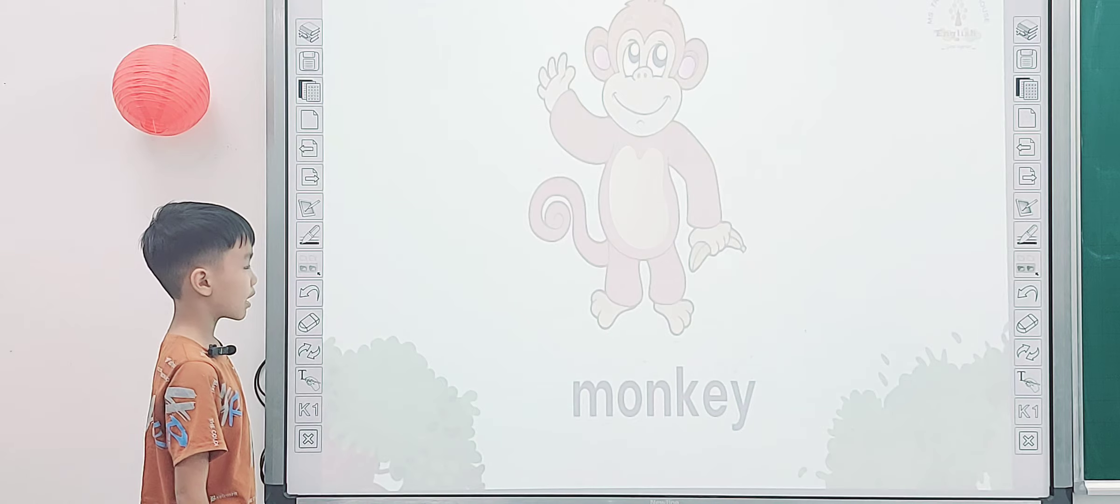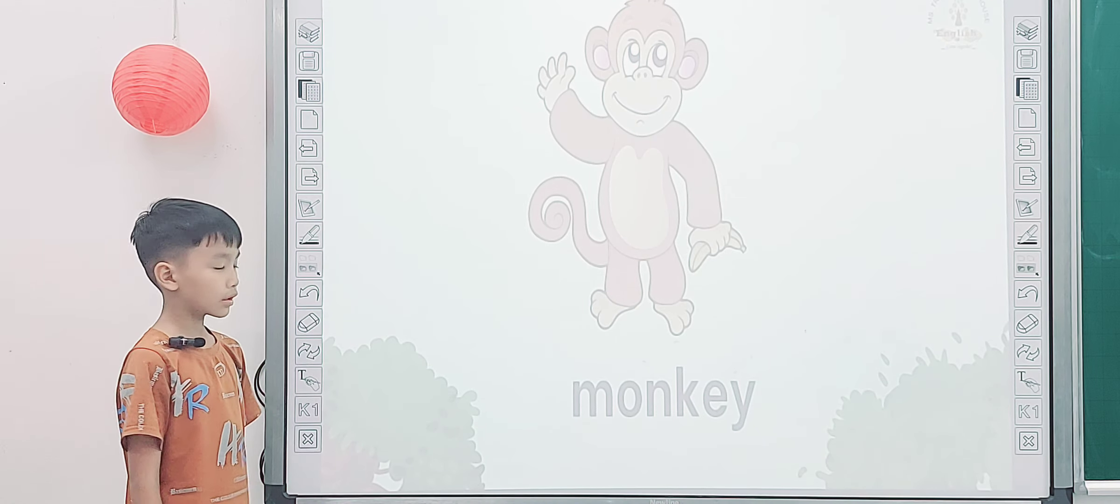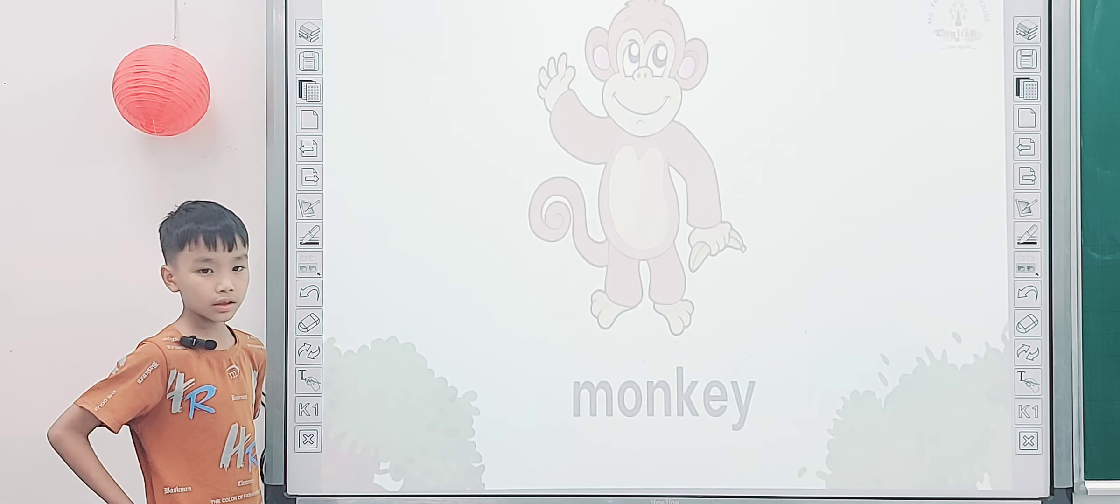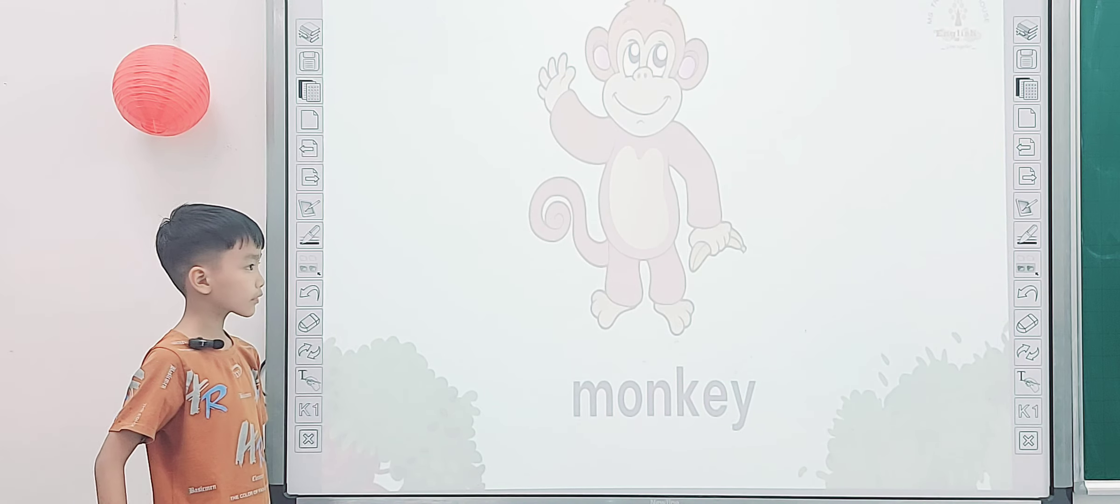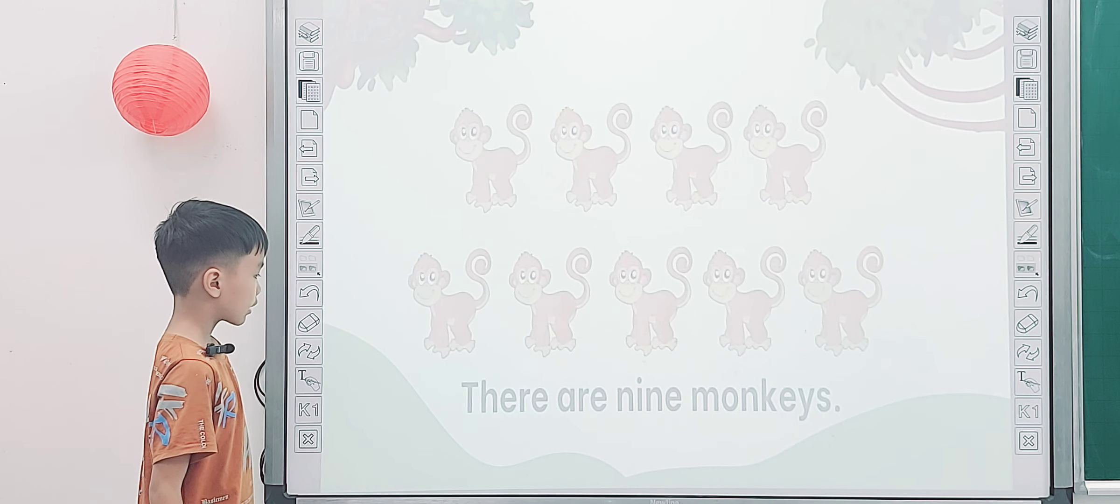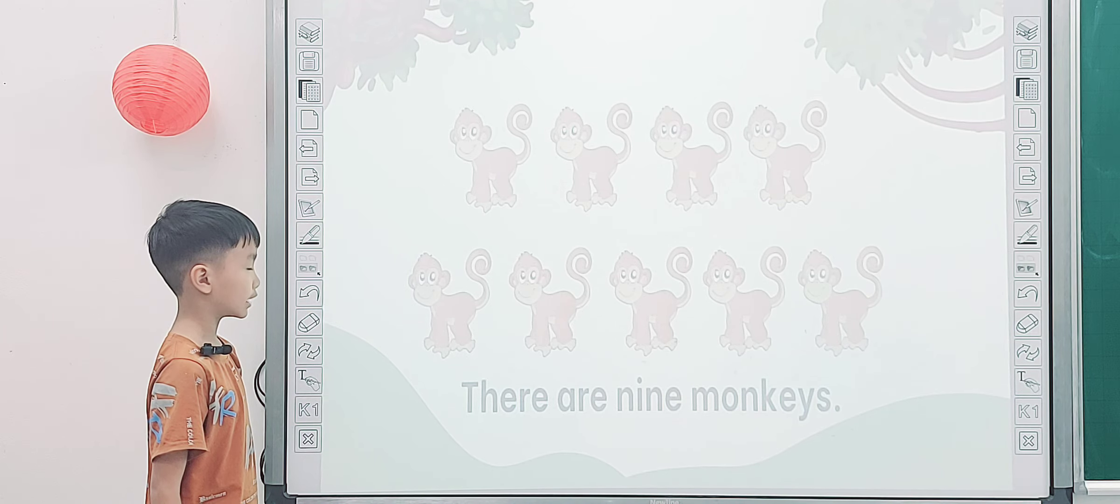Yeah, it is gray. What is it? Monkey. And what color is the monkey? It is brown. How many monkeys are there? There are nine monkeys.